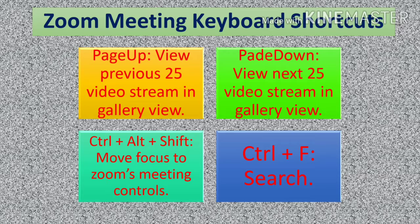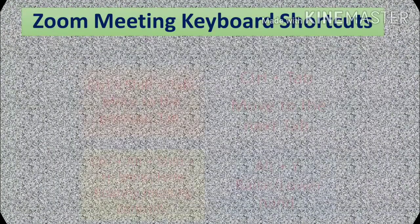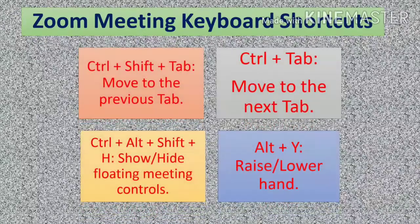Ctrl plus F is for search. Ctrl plus Shift plus Tab is used to move to the previous tab. Ctrl plus Tab is used to move to the next tab. Ctrl plus Alt plus Shift plus H — these four keys together — is used to show or hide floating meeting controls.